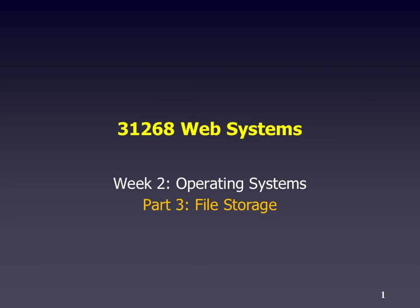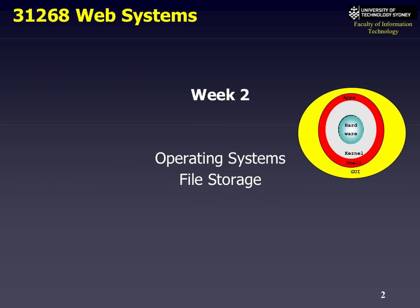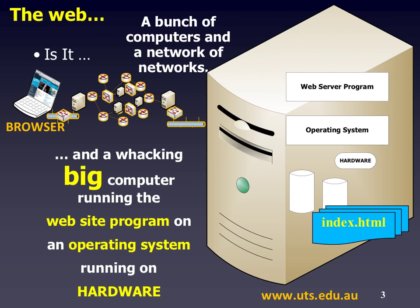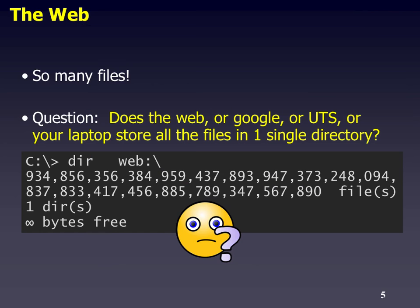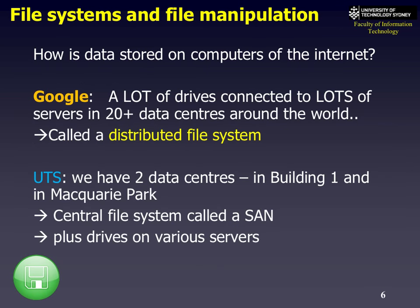Web Systems Week 2, Part 3: File Storage. We've seen from the previous mini lectures that the internet is really big and data needs to be stored somewhere. We looked at the example of Google with 200 terabytes of data that is actually indexed, and we've looked at the question of where data is stored in logical and physical partitions. Google isn't a single operating system or a single computer — it's got a lot of computers connected to a lot of servers and something close to 20 plus data centers around the world. This is what we call a distributed file system.